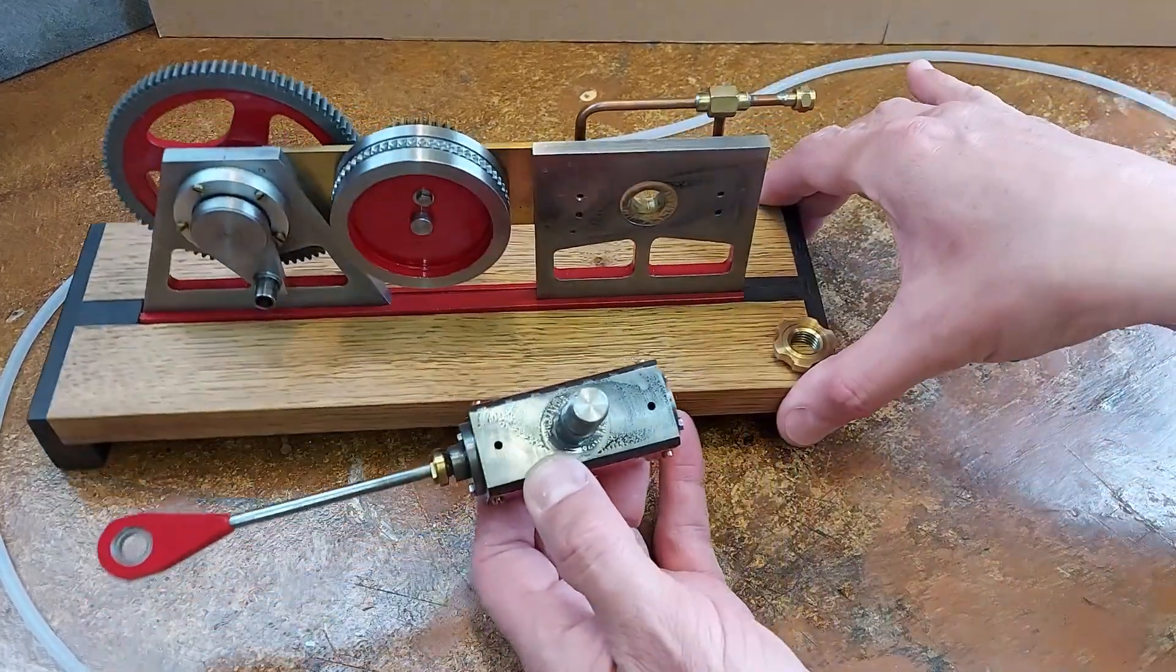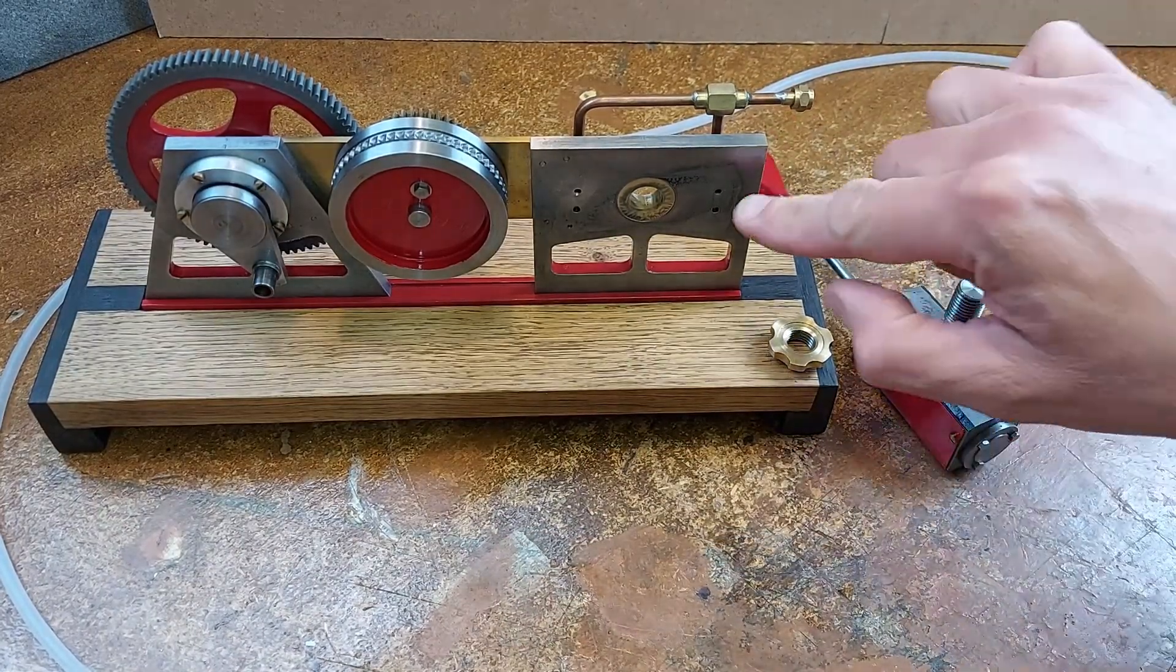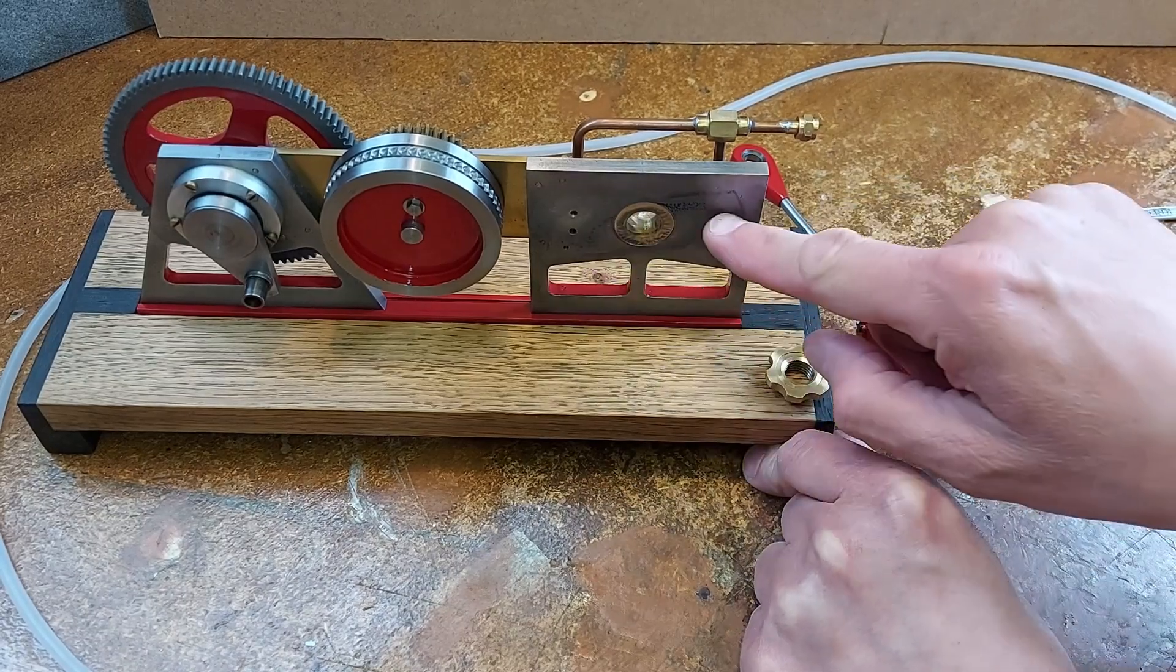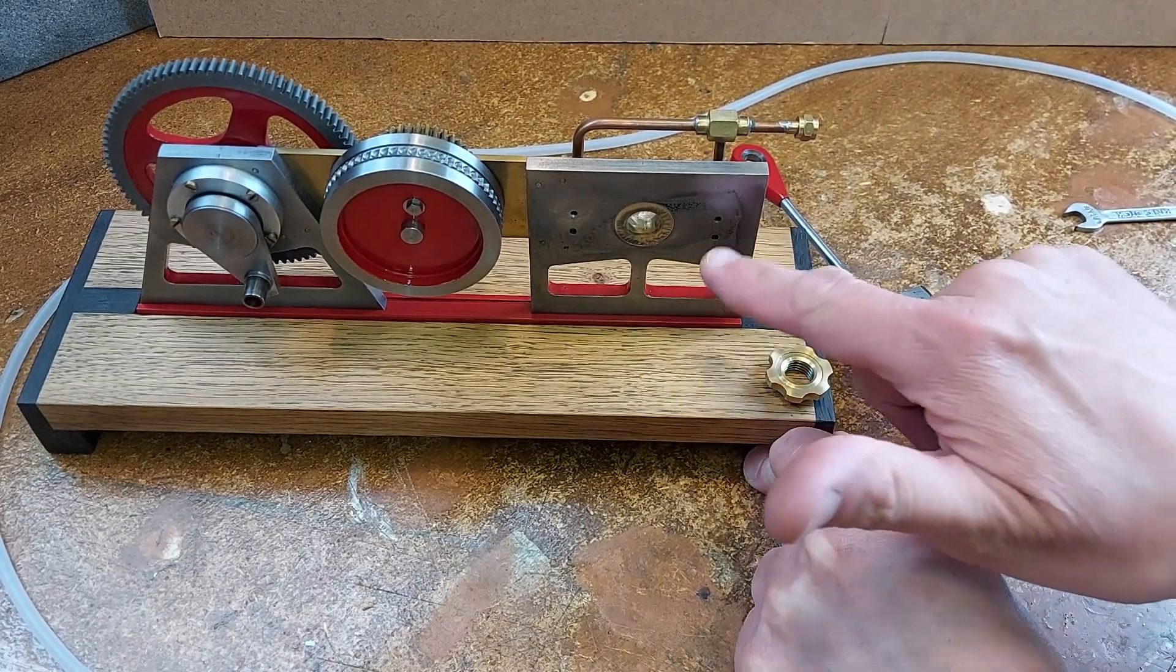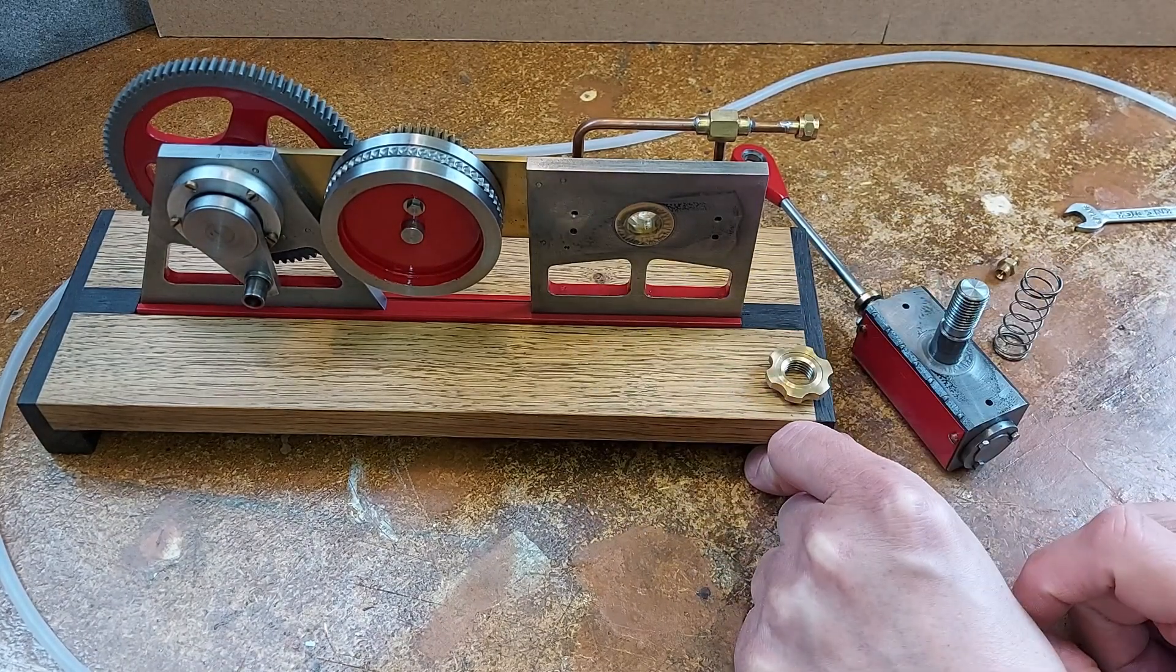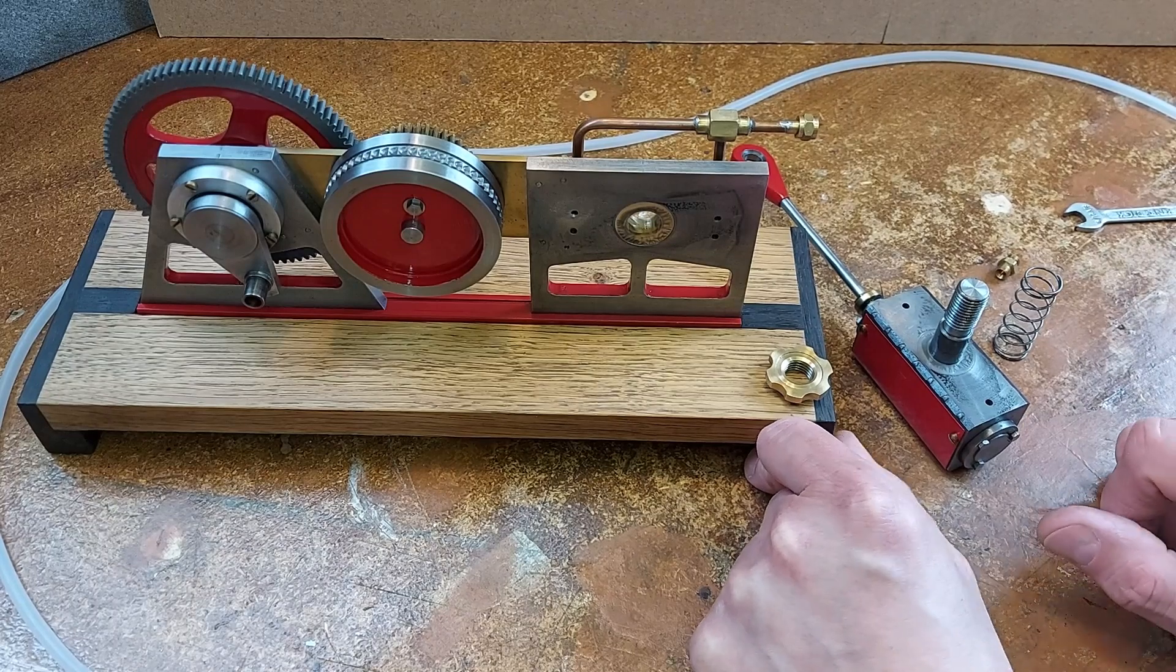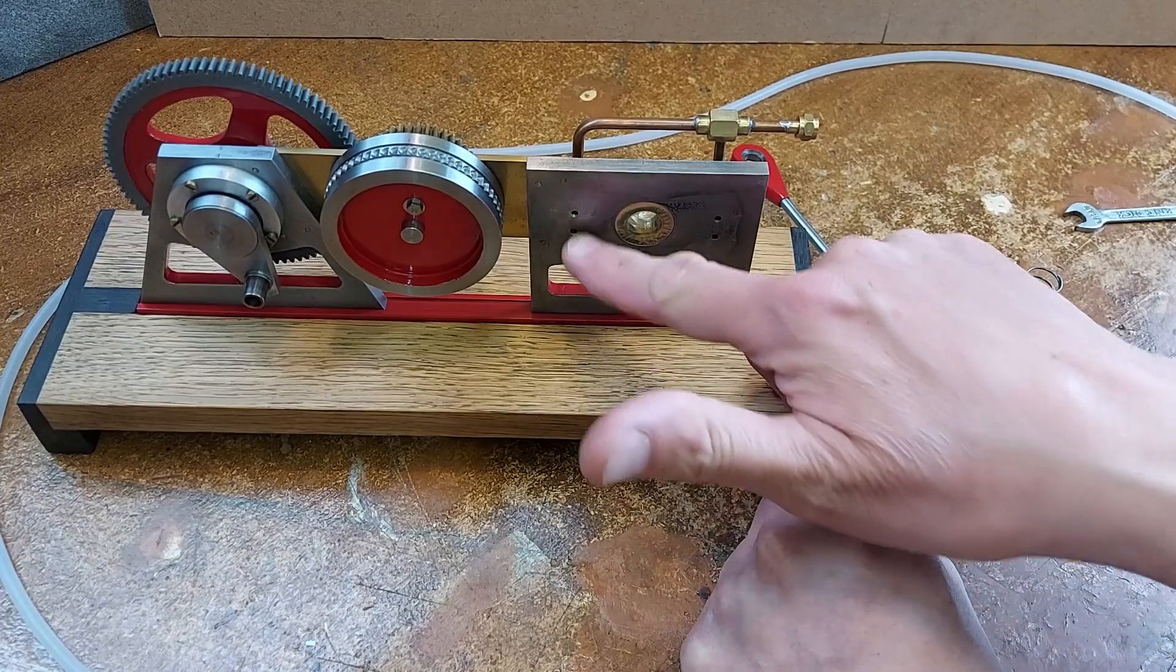Now if we look at the valve block here at the back, the two ports at the top on each side is where the steam or compressed air comes in. The two ports at the bottom are where the exhaust gas, steam, or compressed air escapes. So that's the exhaust ports at the bottom.